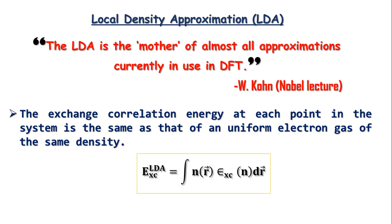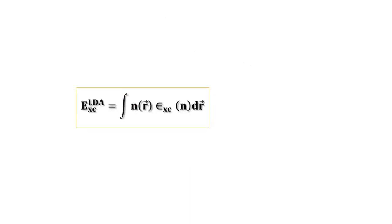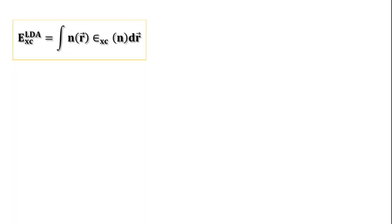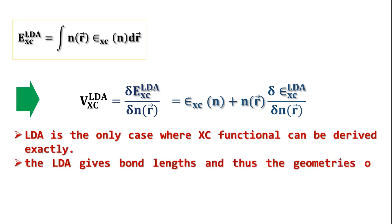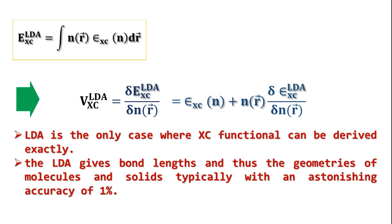The exchange-correlation energy of the system is given by E_xc of LDA equals integration over n times ε_xc times dr. Now see, from this you know that the exchange-correlation potential should look like V_xc equals δE_xc divided by δn, which gives, just the product rule of derivative, you get ε_xc plus n times δε_xc divided by δn. Now actually, this LDA is the only case where the XC functional can be derived exactly. And the LDA gives bond lengths and thus the geometries of the molecules and solids typically with an astonishing accuracy of one percent. This is pretty surprising.